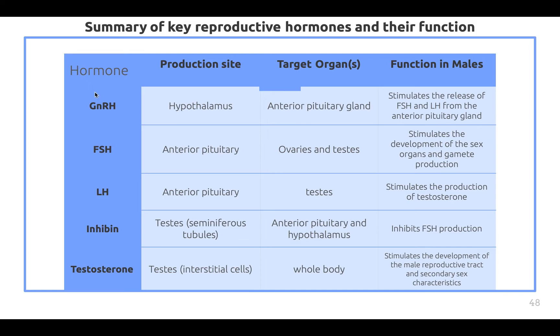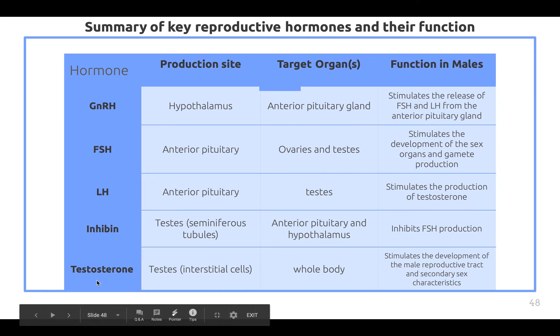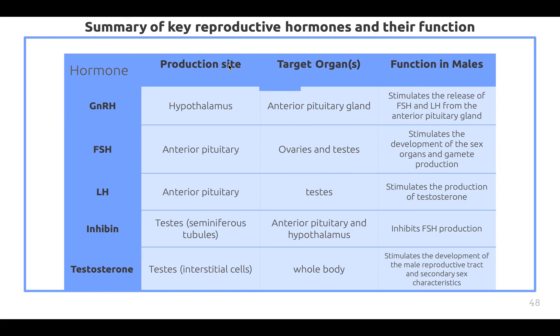Here is a summary chart of the key reproductive hormones — GnRH, FSH, LH, inhibin, and testosterone — including their target organs, functions, and production sites.